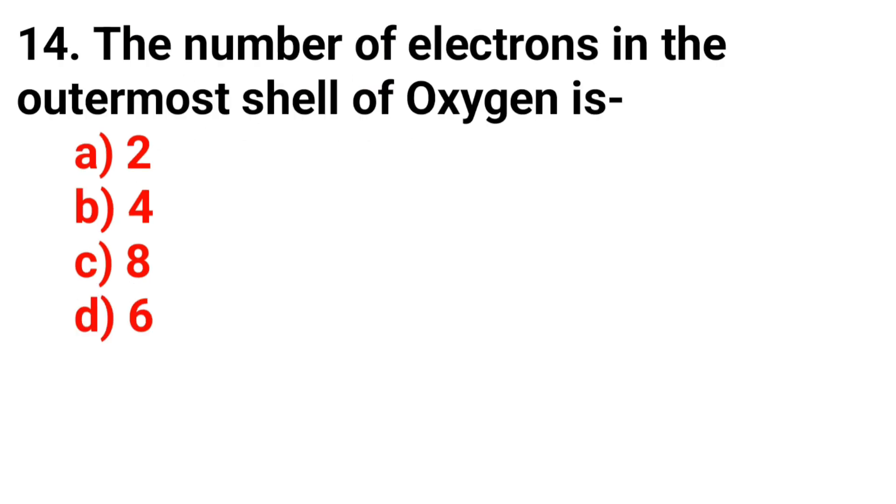Question 14. The number of electrons in the outermost shell of oxygen is. The answer is Option D, 6.